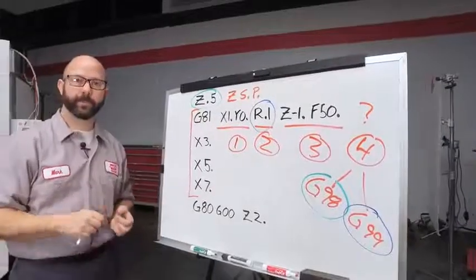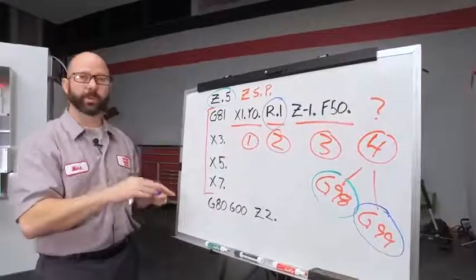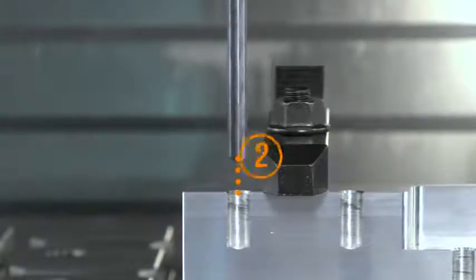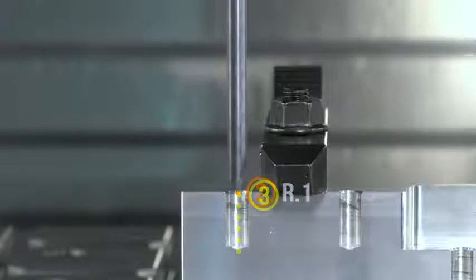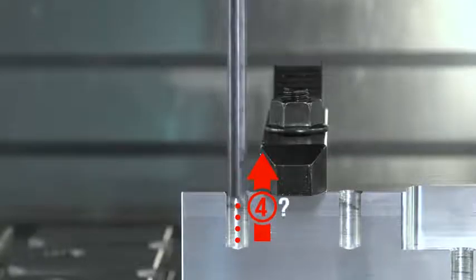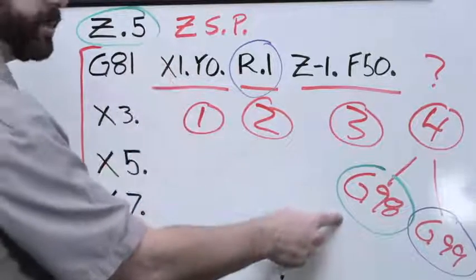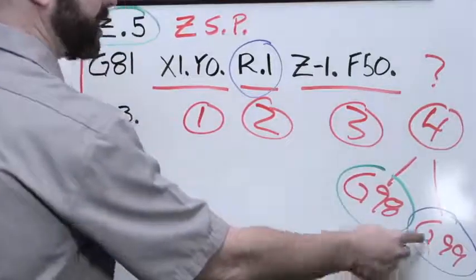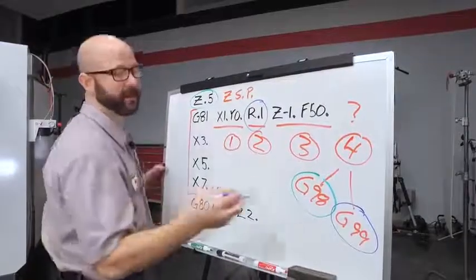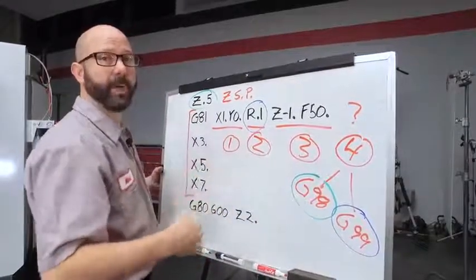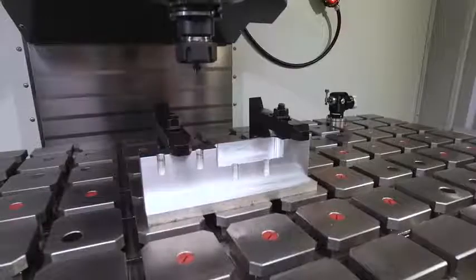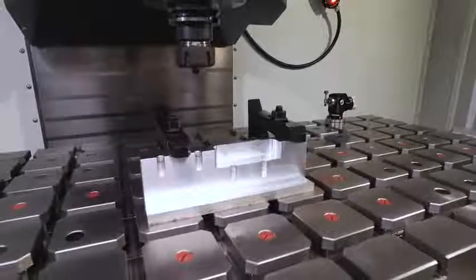To recap, the control is going to use the same order of operations for all these holes. One, two, three, four. First, it's going to position the XY. Second, it's going to rapid to the R plane. Third, it's going to feed to our Z depth. And fourth, it's going to either rapid back to our Z starting position if a G98 was commanded, or it's going to rapid back to our R plane if a G99 was commanded. Now, it's worth noting that G98 is used by the control by default. So even though we haven't commanded a G98, we're still using it. Well, now that we've covered the basics of our can cycles, we can come back and address those clamps.